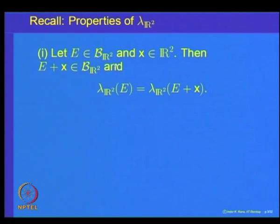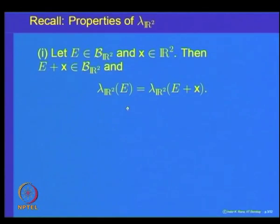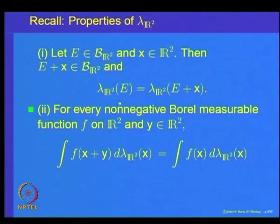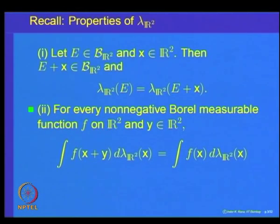Let us recall what we had shown in the previous lecture: if E is a Borel measurable subset of R², then its translate E plus x is also a Borel measurable subset in R², and the Lebesgue measure of the translated set is the same as the Lebesgue measure of the original set. For a non-negative Borel measurable function on R², the integral of the translated function, that is ∫f(x+y) dλ(x), is the same as ∫f(x) dx, and this is also equal to the integral of f(−x). So under reflections and translations, the integrals do not change.